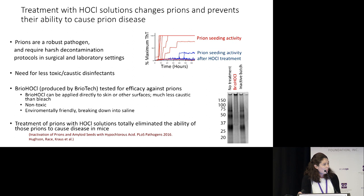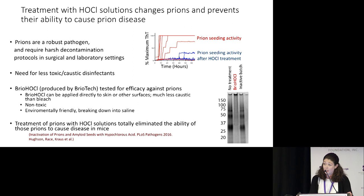A couple of years ago, we published a study showing that when we treat prions with these hypochlorous acid solutions as a disinfectant, we totally eliminated the ability of prions to cause disease in mice. As other correlates, we used RT-QuIC to confirm that these prions were no longer able to amplify themselves.